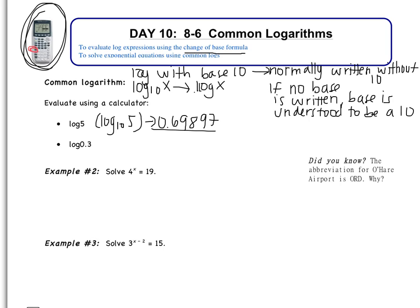Log of 0.3, same thing, hit the same button, log of 0.3, end your parentheses, and you get negative 0.5229. That's log of 0.3. Again, the base isn't written, so it's understood to be 10. This is really log base 10 of 0.3. So anytime we don't write the base, base is understood to be a 10.